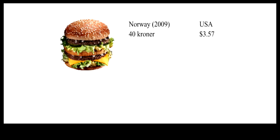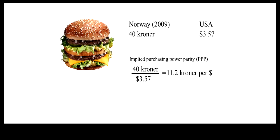The Big Mac sold for 40 kroners in Norway and $3.57 in the USA in 2009. If $3.57 could buy 40 kroners in the foreign exchange market, the Big Mac would have cost American buyers the same in both countries. In other words, the implied exchange rate should be 11.2 kroners per dollar. This implied exchange rate is called the purchasing power parity, or PPP, because it would have equalized the prices of the Big Mac in both countries. But the actual dollar exchange rate in the foreign exchange market was only 6.51 kroners per dollar.